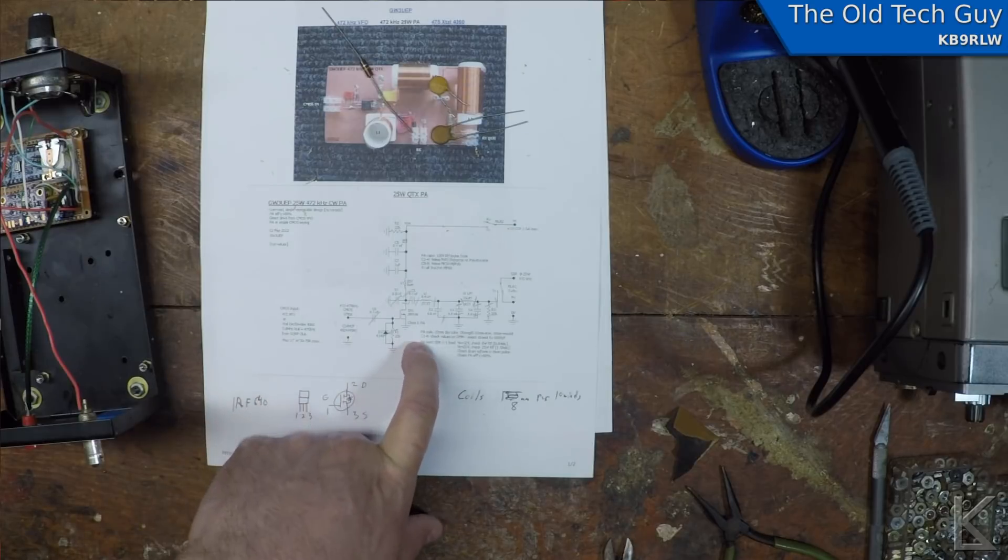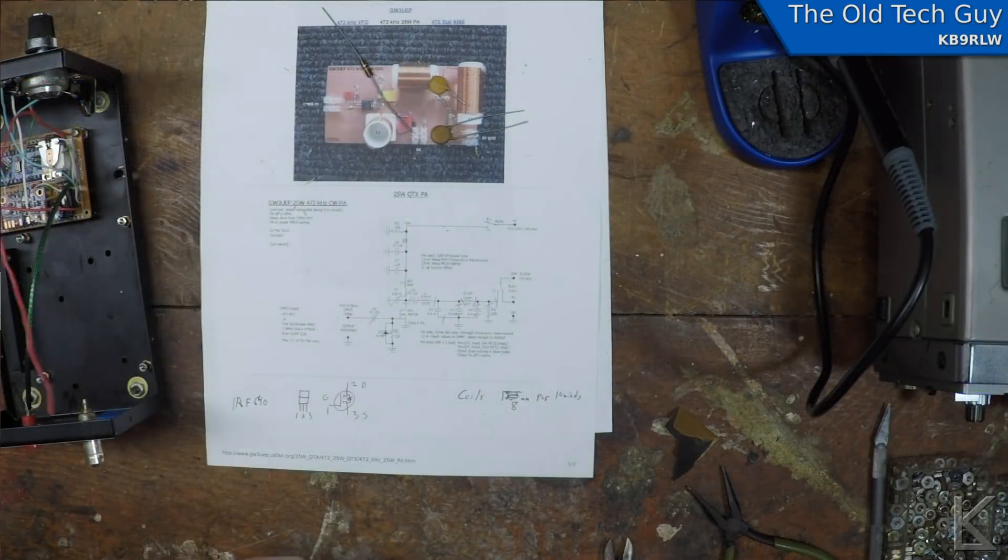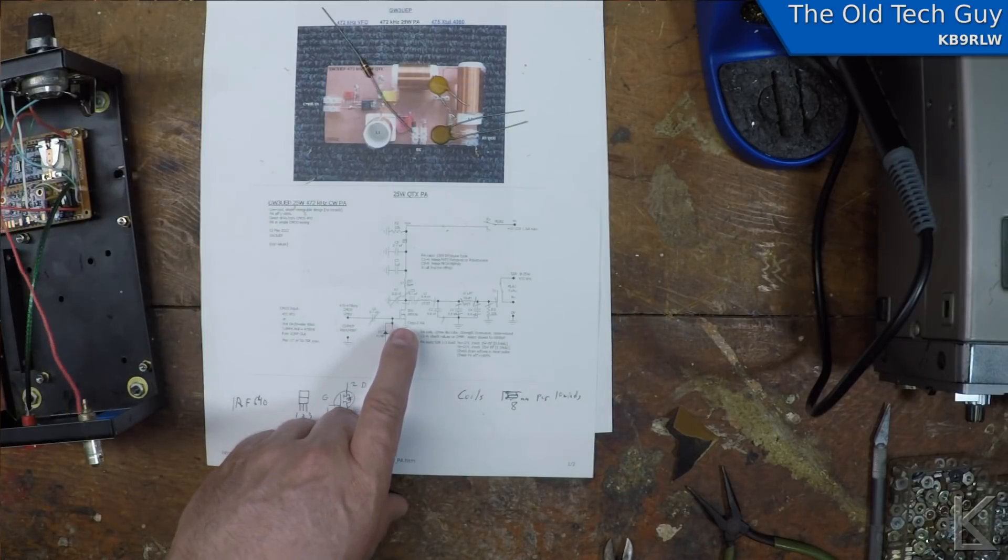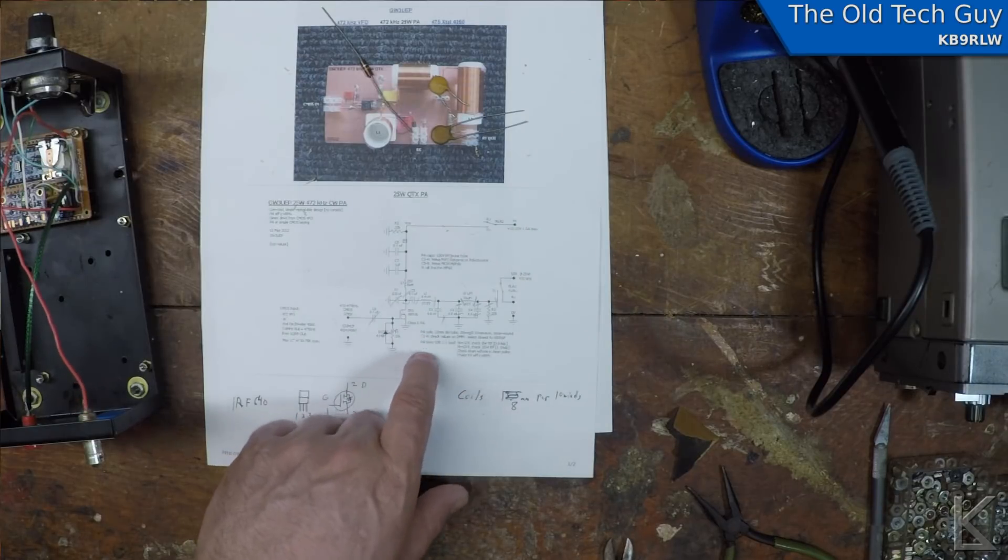Class E which is really what this is is usually used for RF applications and again it's a switching power MOSFET so that part of it's the same but there will be a resonant LC network on its output that will due to the capacitor's charge and discharge time and the rise and fall time of the magnetic field on the inductor and their interaction will smooth that square wave coming out of the power device back into a sine wave. So this is actually a class E amplifier.